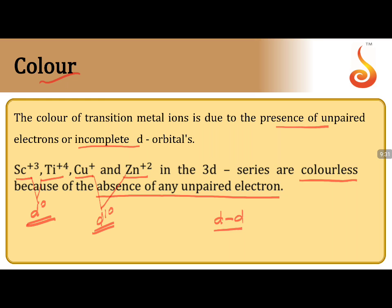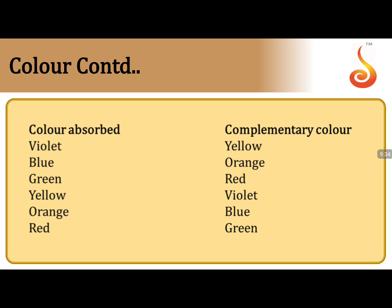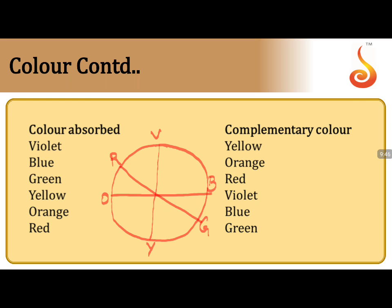The complementary color concept is shown via a color wheel. Violet corresponds to yellow as complementary; blue corresponds to orange; red corresponds to green; yellow corresponds to violet; orange corresponds to blue. Remembering this color wheel allows you to easily answer examination questions about the observed color of transition metal complexes.